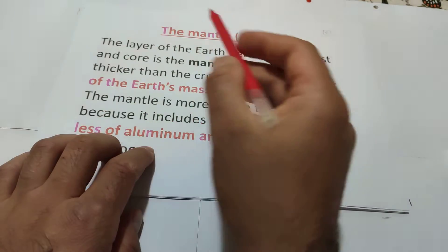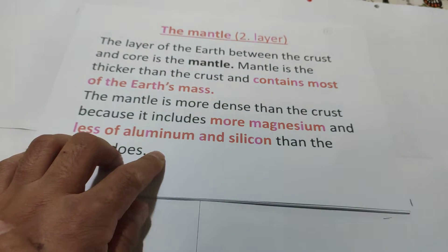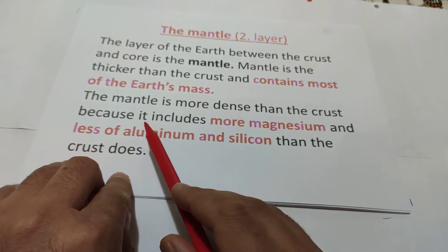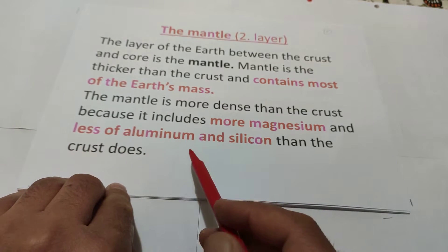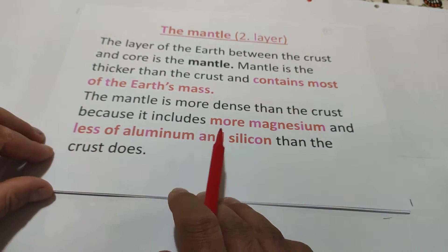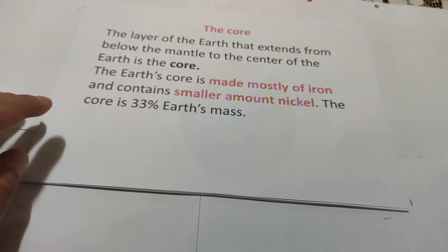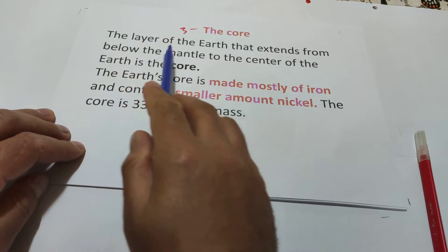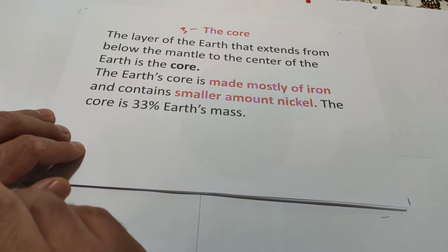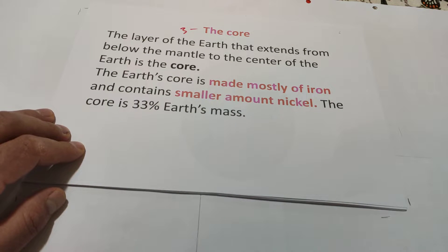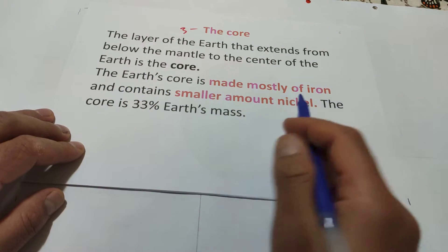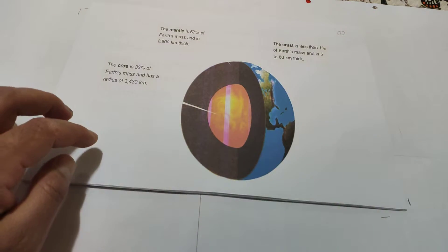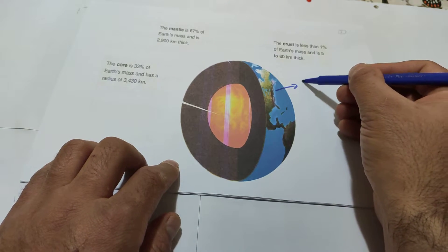The second layer of earth is the mantle. The layer of earth between the crust and core is the mantle. The mantle is thicker than the crust and contains most of the earth's mass. The mantle is more dense than the crust because it includes more magnesium and less aluminum or silicon than the crust.